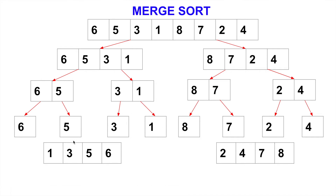And also we have the first half sorted: 1, 3, 5, 6. So now we have the two halves of the original input array sorted. What are we going to do? We just merge these two sorted subarrays into one final output. The beauty of this is that these two subarrays are already sorted — 1, 3, 5, 6 and 2, 4, 7, 8. So every time when we try to merge these two sorted subarrays, we only need to compare the front element of each. That's the beauty of merge sort.